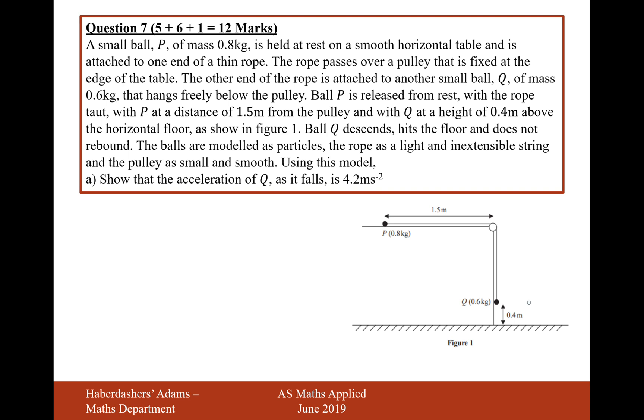So let's work this out. It's going to be forced downwards which is going to be 0.6g. There's going to be some tension going upwards. So it's going to be 0.6g minus T equals mass, which is 0.6, times acceleration, which is just a. We don't know what that is yet.